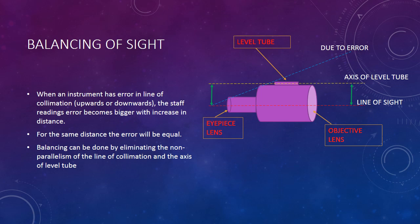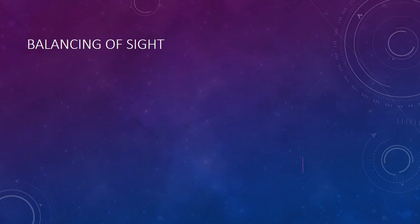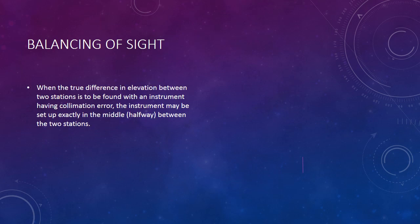How can we manage to eliminate the error? One way is permanent adjustment, or another is adjusting it physically. Now let us see one type of eliminating the error due to upward or downward tilting of the collimation line. When the true difference in elevation between two stations is to be found out with an instrument having a collimation error, the instrument may be set up exactly in the middle — or halfway — between the two stations.